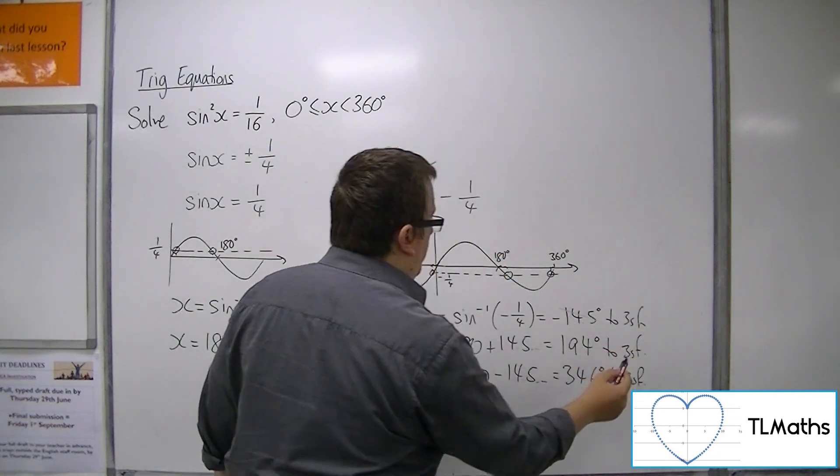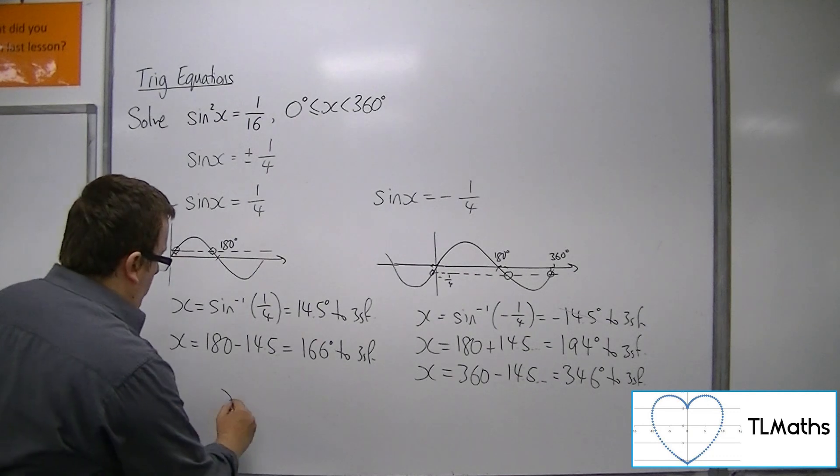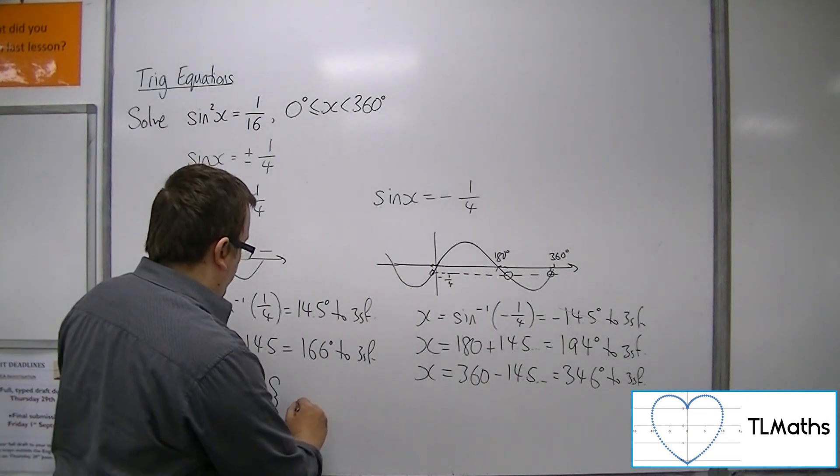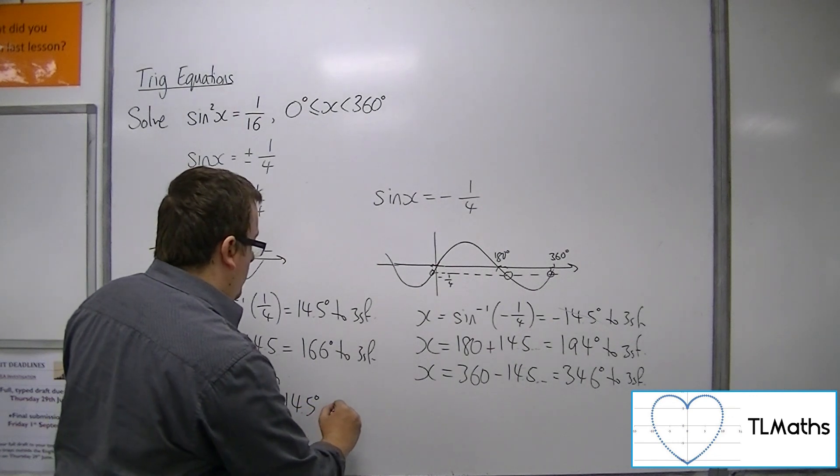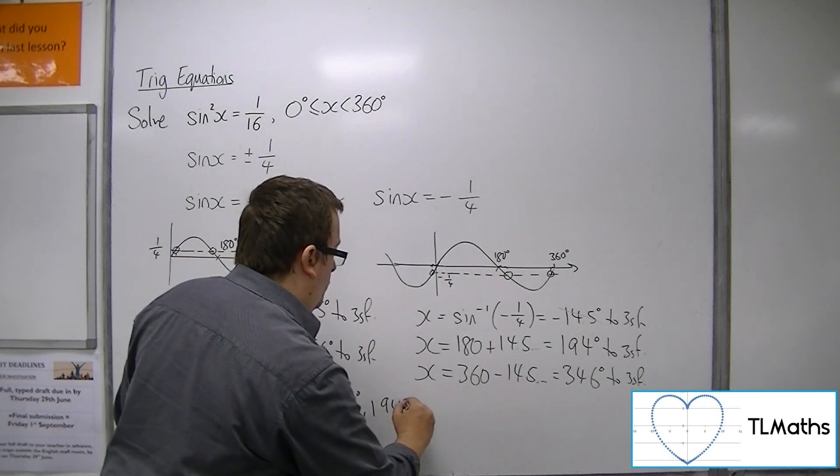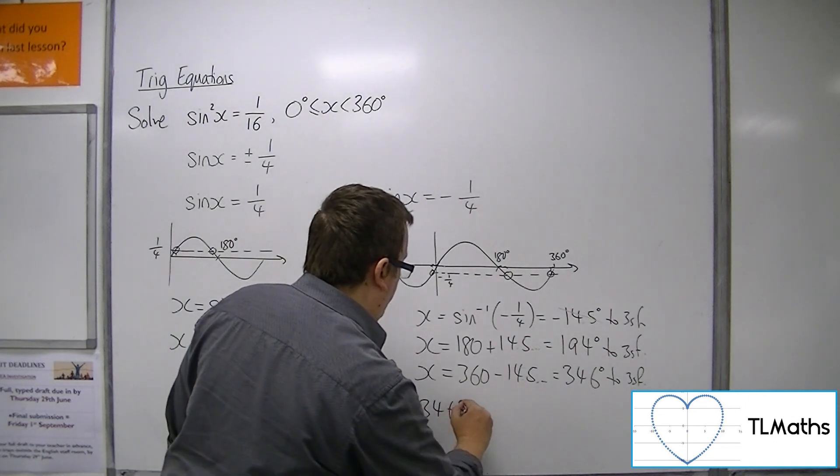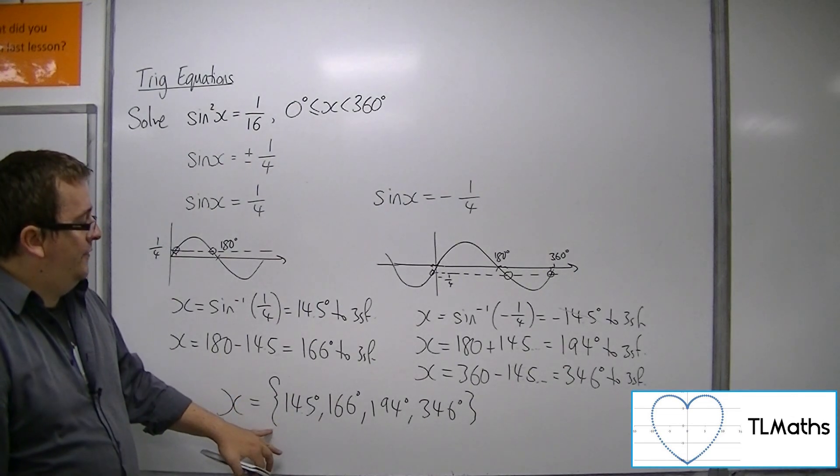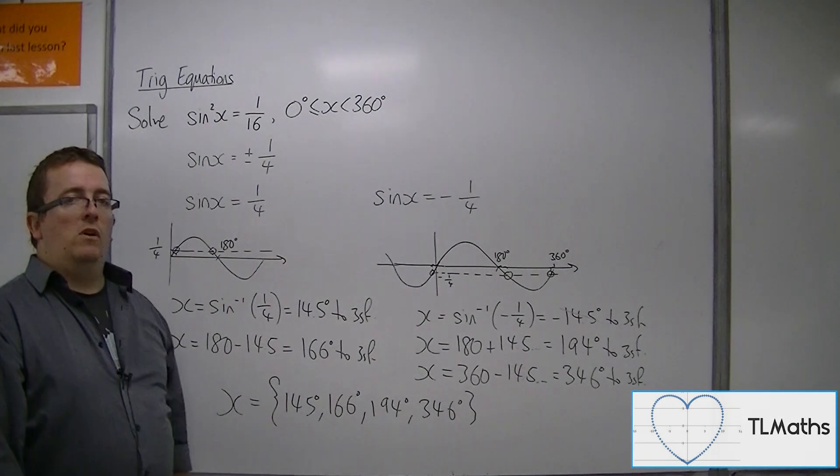So that's not a solution I'm looking for. So I have four solutions. I've got 14.5, I've got 166, I've got 194, and I've got 346 degrees to three significant figures, four solutions to the original problem.